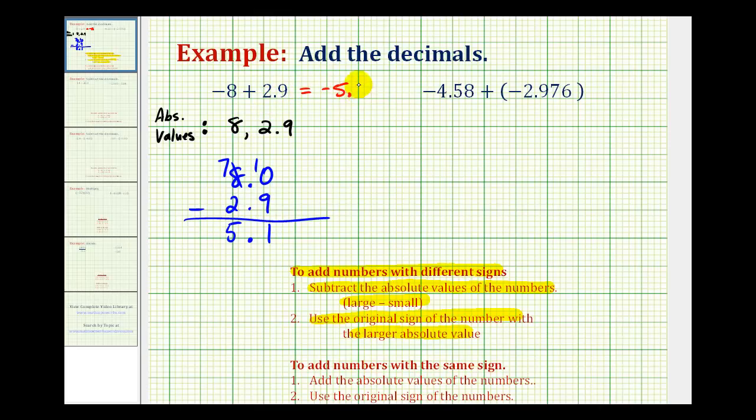And we know it's negative for two reasons. The formal rule says to use the original sign of the number with a larger absolute value. Well, eight is larger than 2.9, which came from the negative eight. But it should make sense the negative is outweighing the positive, resulting in a negative sum.